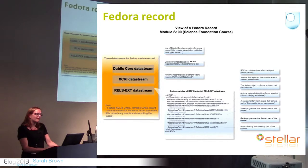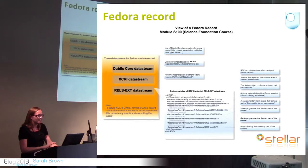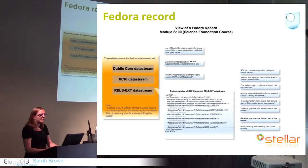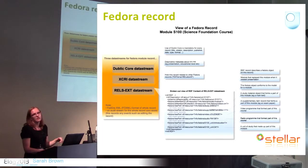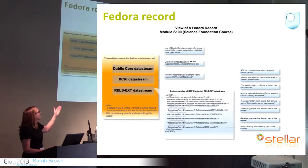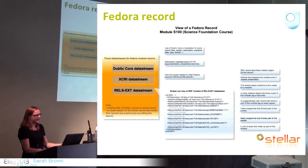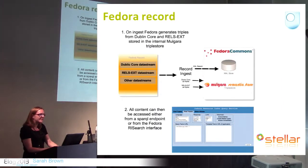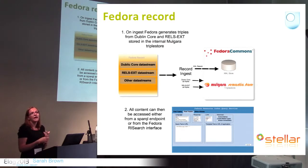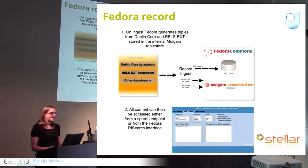I'm going to show you a couple of pictures of what was going on in Fedora. You can see a picture of the Fedora record for the module S100 — that's the science course — with three data streams within it. We've broken out the RDF from that and tried to indicate what it relates to. The Fedora record was then ingested and the triples were created, which allowed the content to be accessed either via SPARQL or the Fedora search interface.